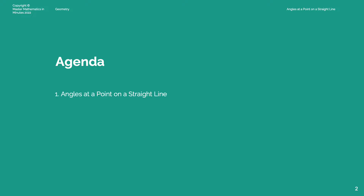Welcome to Master Mathematics in Minutes. Today's topic is about angles at a point on a straight line. We'll cover a couple of examples on how to calculate angles on a straight line, and we'll conclude the topic with a summary.